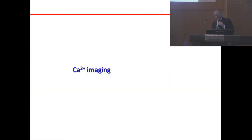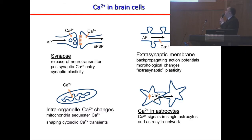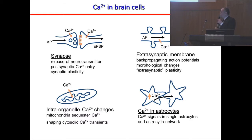Moving to calcium imaging: when choosing the method, you have to consider what you're looking at. We can study calcium dynamics in presynaptic terminals, in dendritic spines, in dendrites, in mitochondria, or in entire cells. Depending on the calcium concentration changes expected, we must choose dyes with appropriate affinity and KD. We also have to consider the duration of calcium signals when choosing the dye, and whether to use confocal or two-photon imaging versus fast digital imaging with CCD or CMOS cameras, which give less resolution but are much faster.